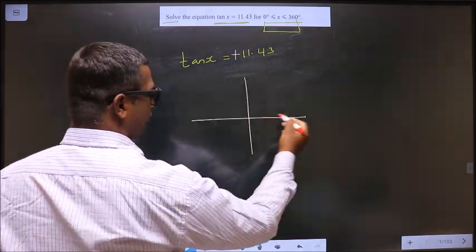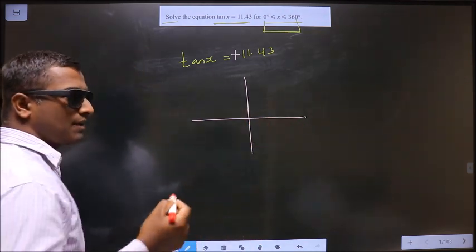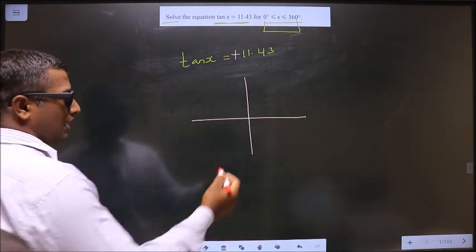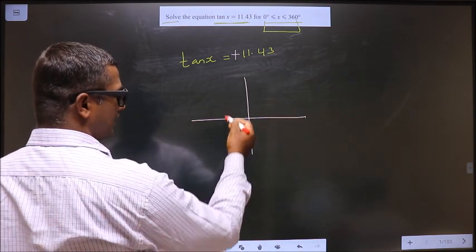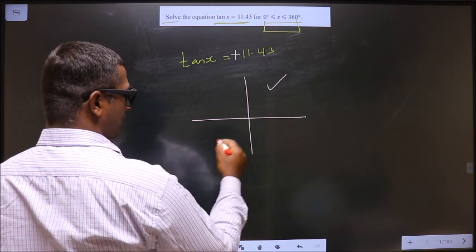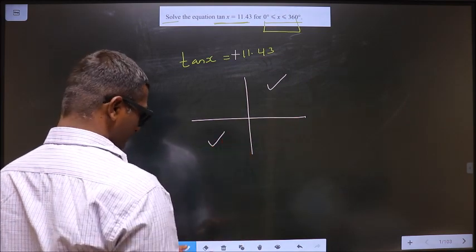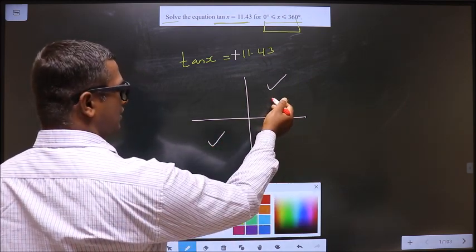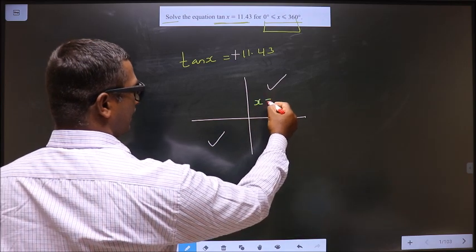Now in the four quadrants, where all is tan positive? Find it out. It is all silver tea cups. Tan is positive in the first and in the third.